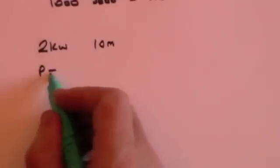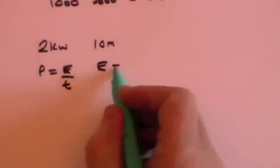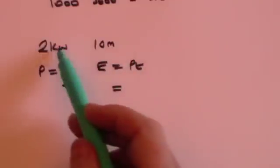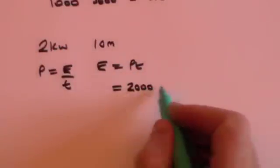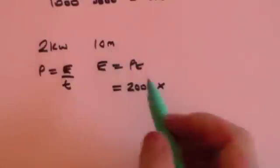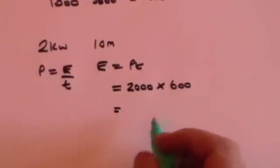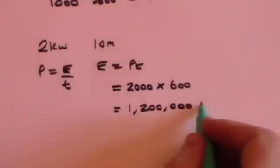Well let's remember that power is energy divided by time so energy is power times time. We must always convert to the proper units so the power, sorry the power is two kilowatts which is two thousand watts